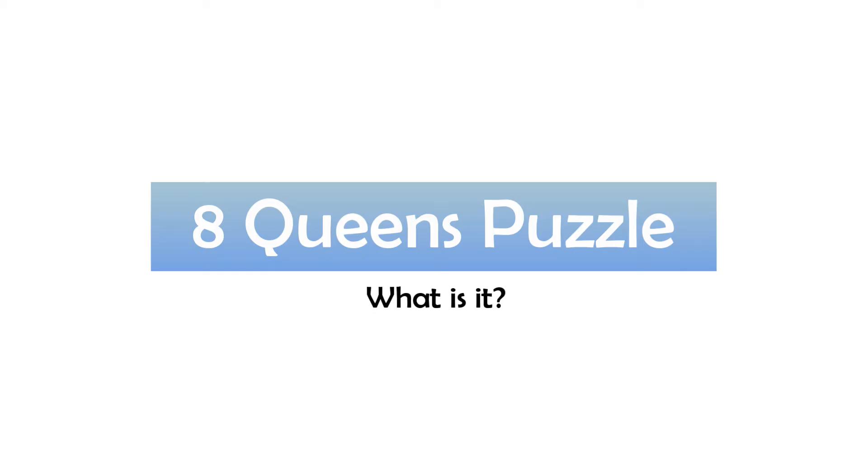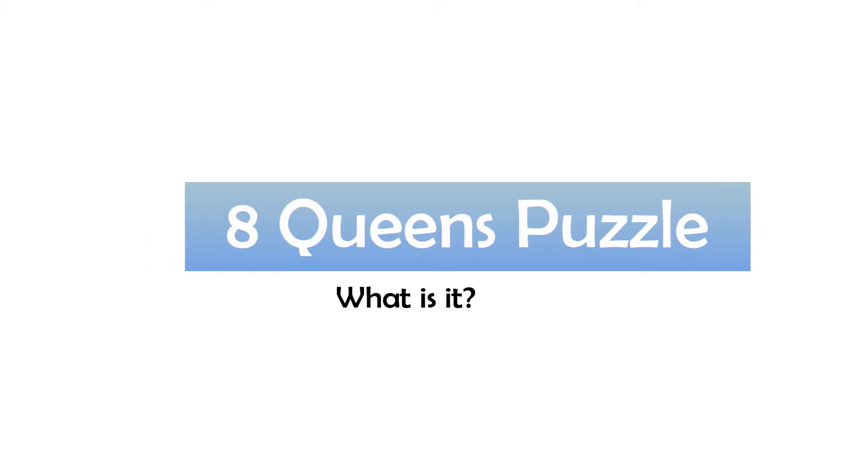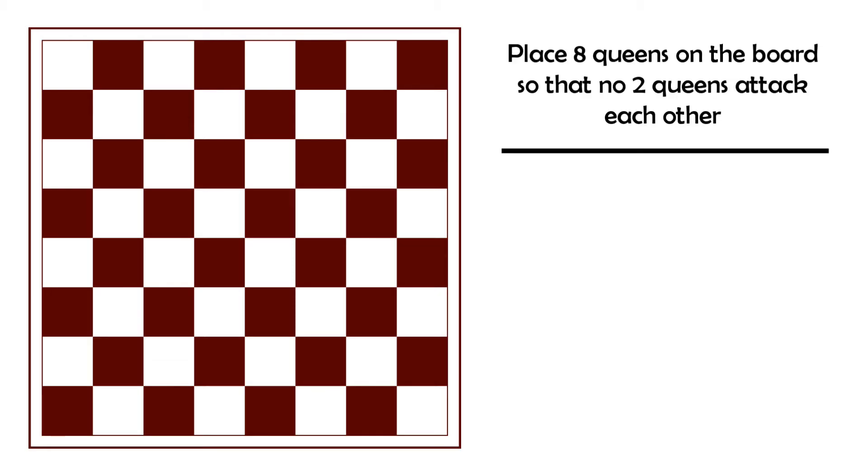So what is the 8 Queens problem? It goes like this: you have a standard 8x8 chess board and you have to place 8 queens on it so that no two queens threaten each other. How do you do it and perhaps more importantly, how many solutions are there?